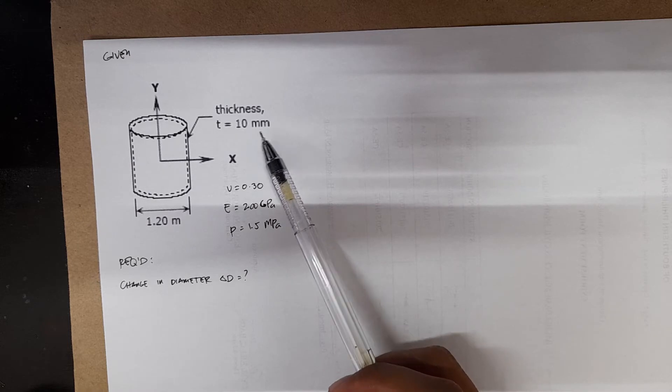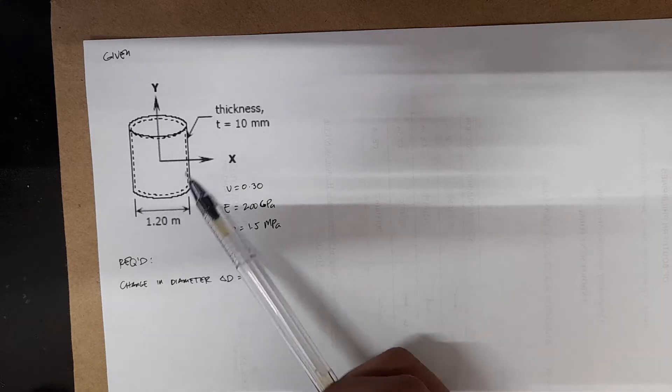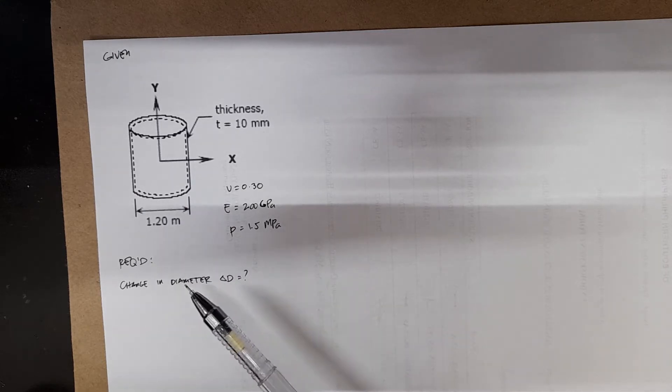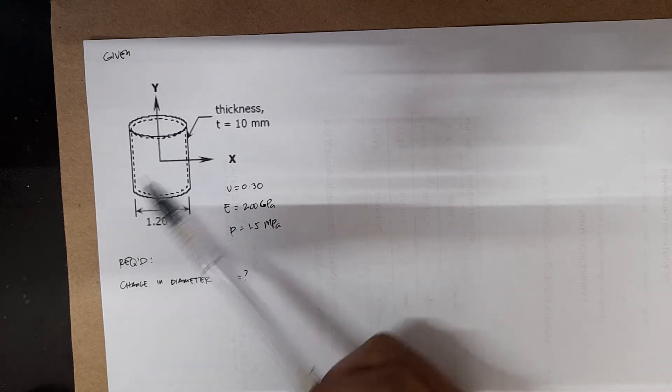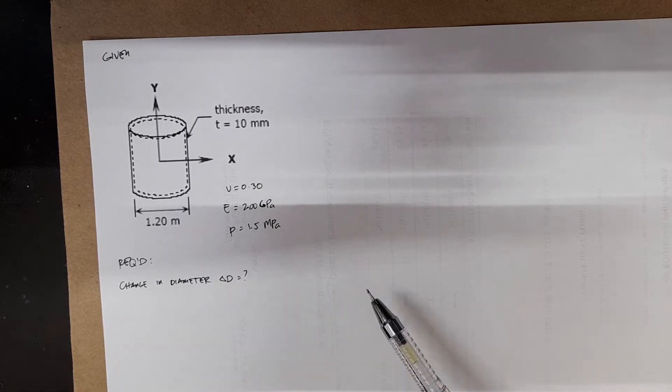We just take note of the units. You have millimeters here and then you have the diameters in meters, so you need to convert this later. And then we're asked to find the change in diameter. Because of the pressure present in the drum, we are anticipating a change in diameter from the original diameter of 1.12.